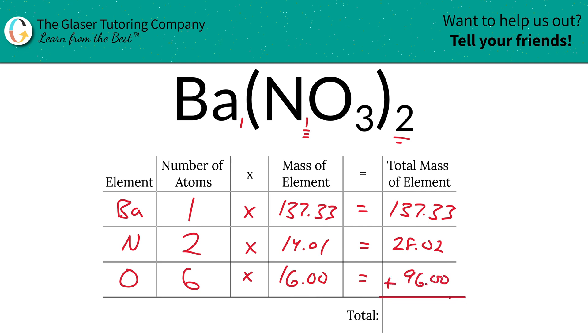And to find now the total mass of the compound, add this up. That's it. Bada bing, bada boom. We're all done. So this is 261.35.